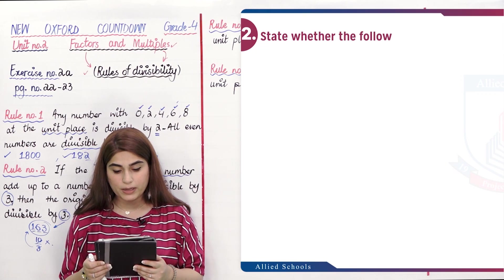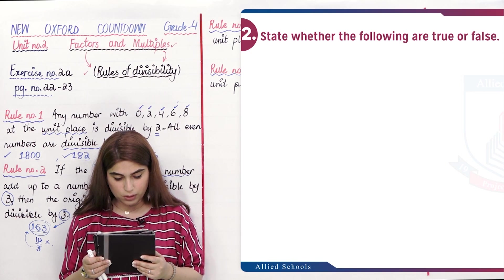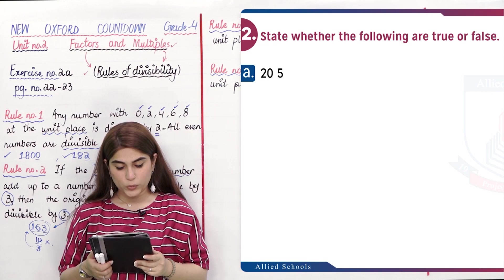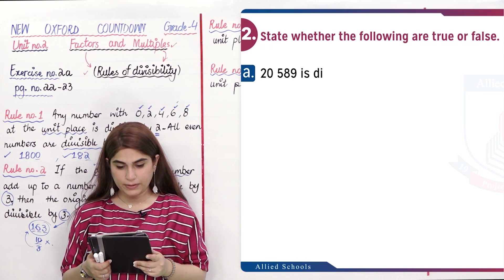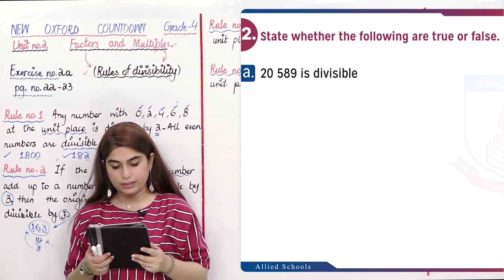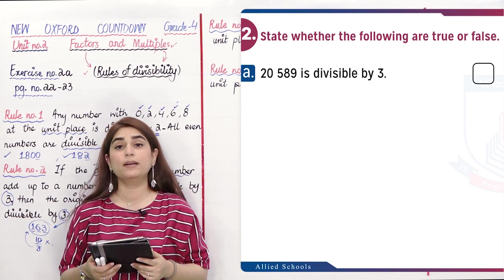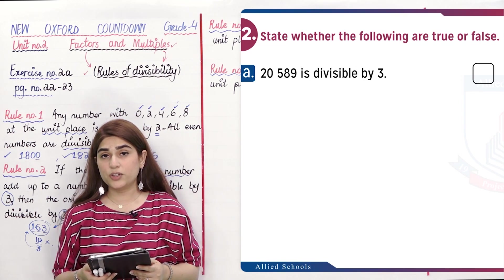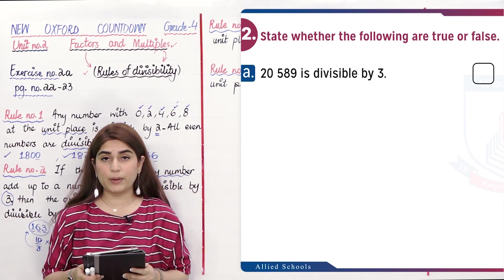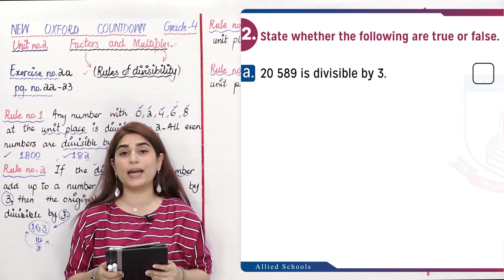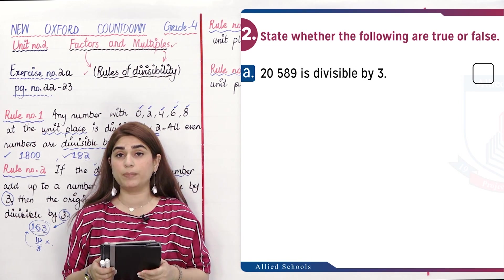State whether the following are true or false. Statement (a): 2589 is divisible by 3. If you add all the digits, you will get a sum that is divisible by 3, so this statement is true.